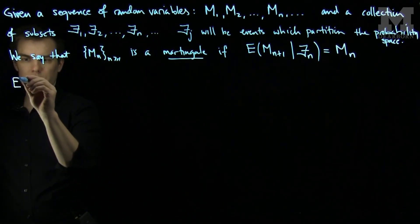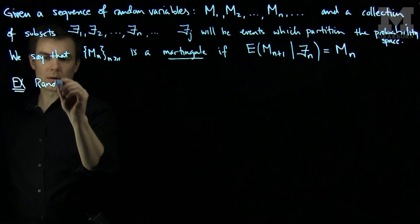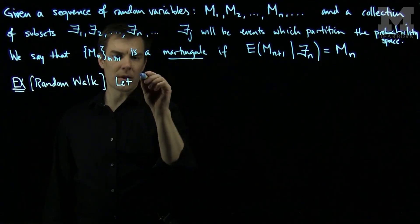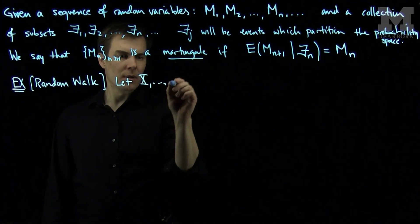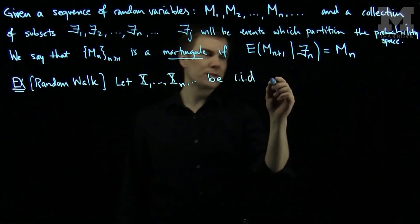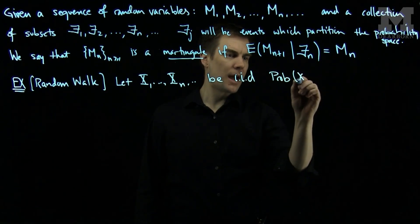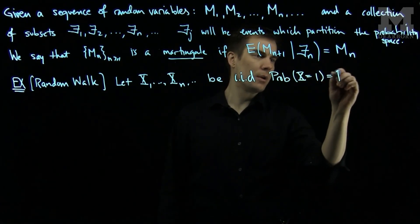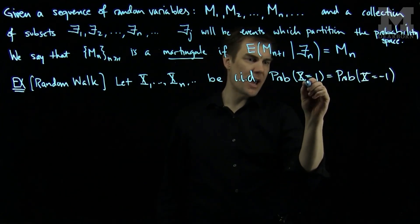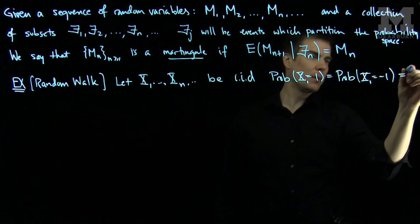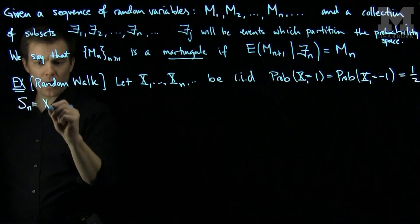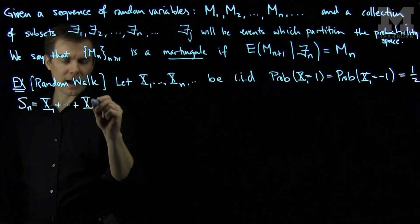Here's the first example: a random walk. This is the prototypical example of a martingale sequence. Let x1, ..., xn be iid (identically independently distributed) random variables such that the probability that x equals 1 equals the probability that x equals negative 1, and those probabilities are one half. We can define Sn to be x1 plus all the way up to xn.